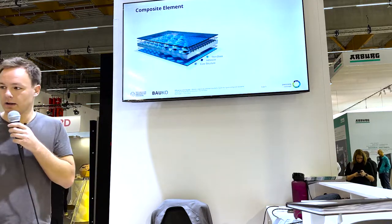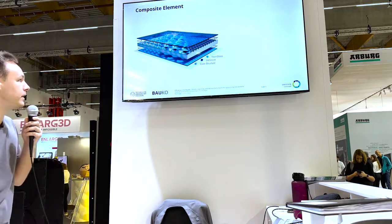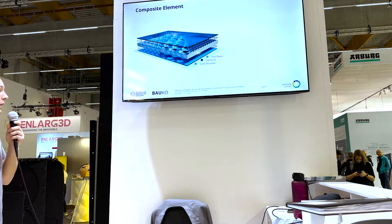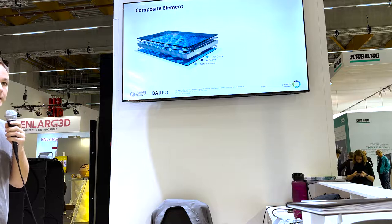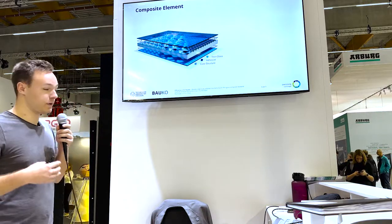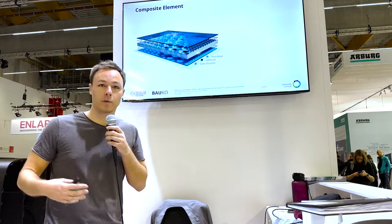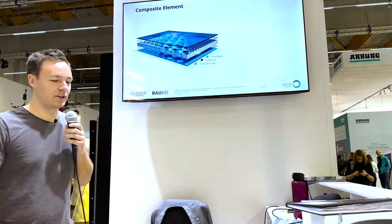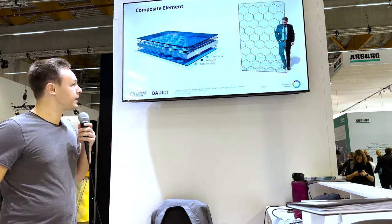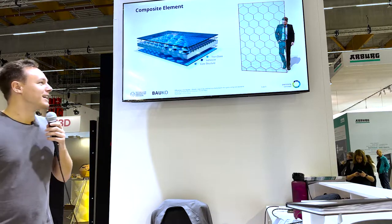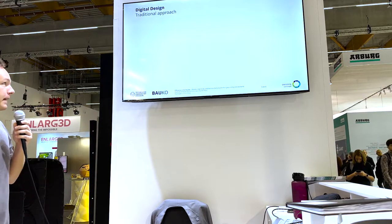You can already see the concept in the rendering here. We have two cover blades out of thin glass and a core structure which is adhesively bonded to the glass. For this core structure we use additive manufacturing, and because we come from the building industry we need big additive manufacturing — that's why we use the Flexbot. Here you can see a rendering close to this one; that was the first idea.